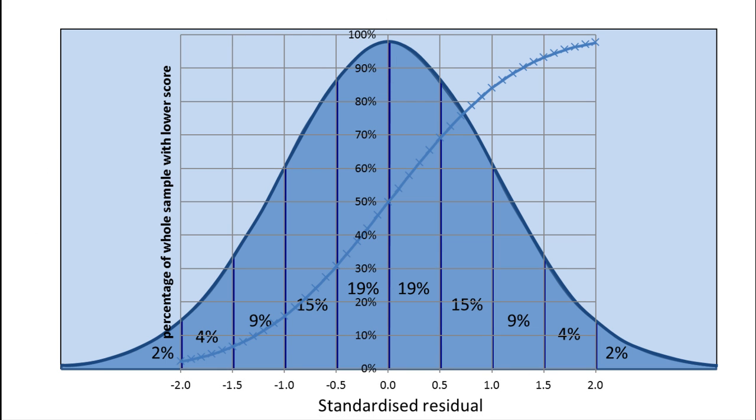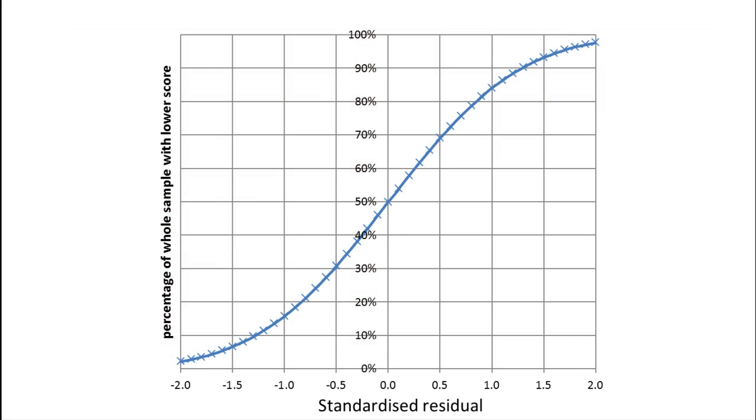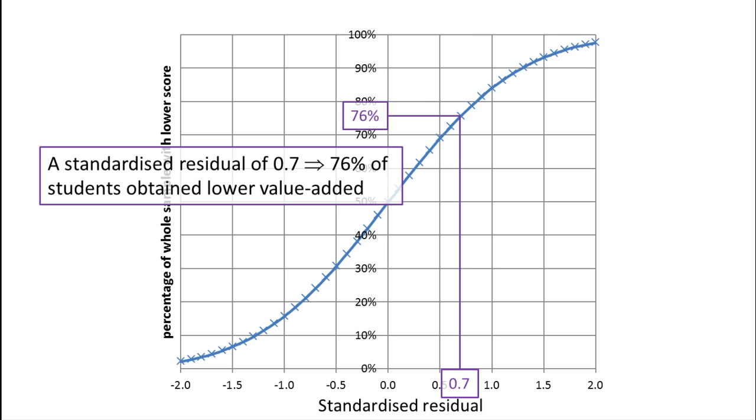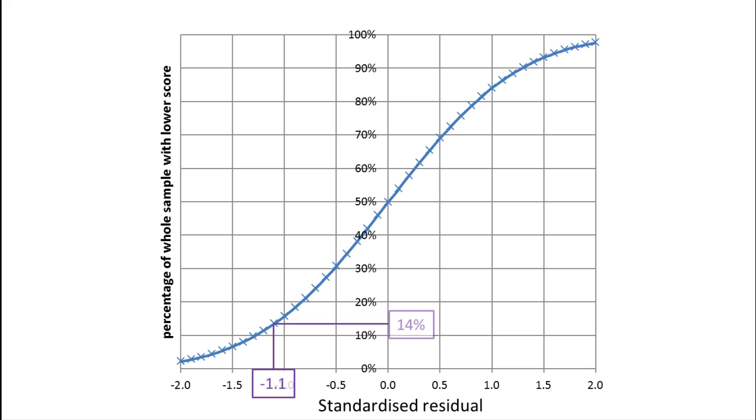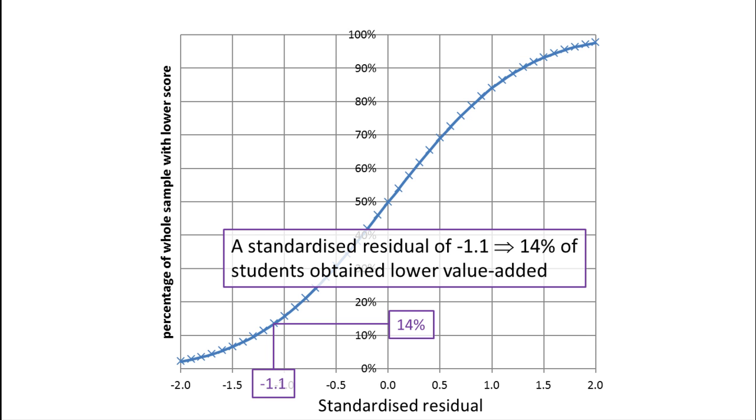There's another way of looking at the same data. This graph shows the relationship between the standardised residuals and the percentage of students who obtained lower value added, what is termed a percentile. We can read percentiles off this graph for any given standardised residual. So for example, a standardised residual of 0.7 gives us a percentile of 76, meaning that 76% of students obtained a lower level of value added. Similarly, a standardised residual of minus 1.1 gives us a percentile of 14. That means 14% of students obtained a lower level of value added.